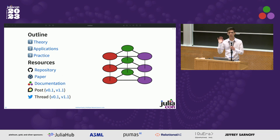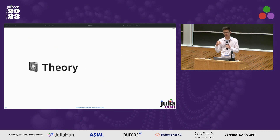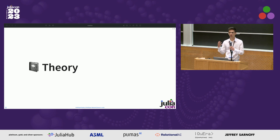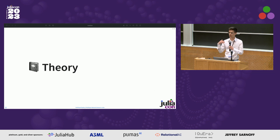All the relevant resources and references are in the resources section of our talk page on the JuliaCon website, these slides included. You may ask: why multilayer network science? The reason is that many real-world complex interconnected phenomena are characterized by multiple types of interactions, multiple modalities, multiple scales, multiple levels of abstraction.